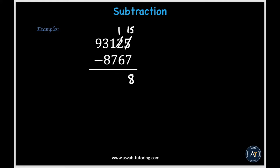Now when we move on to the tens place, we have 1 minus 6. And because 1 is less than 6, we'll have to borrow a 10 to make this a bigger number. We'll borrow that 10 from the hundreds place. And so this 1 will become a 10, and so 10 minus 6 is equal to 4. Going on to the hundreds place, we have 0 minus 7. And because 0 is less than 7, we'll have to borrow another 10. So we'll borrow that from this 3, and this 3 will become a 2 and this 0 will become a 10. And so 10 minus 7 is equal to 3.